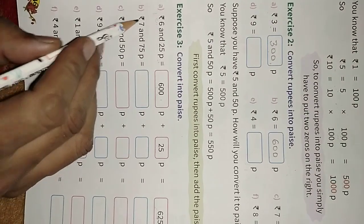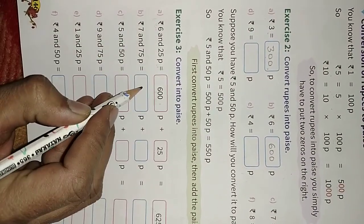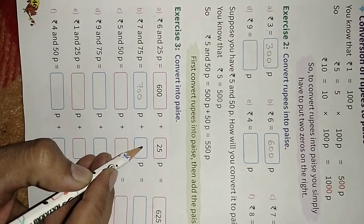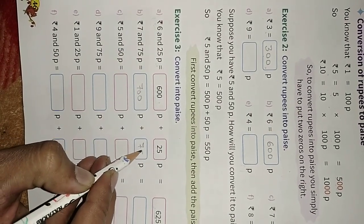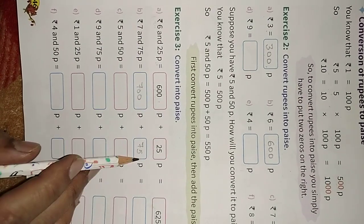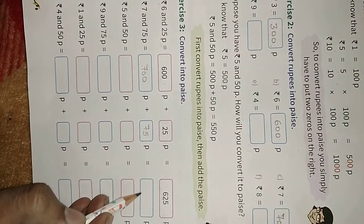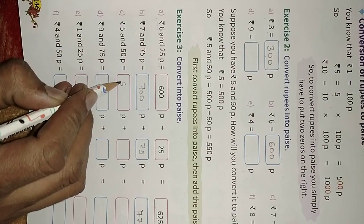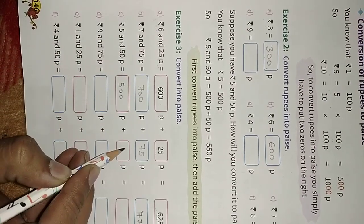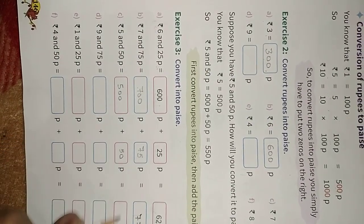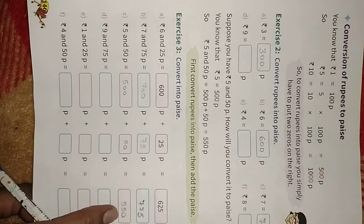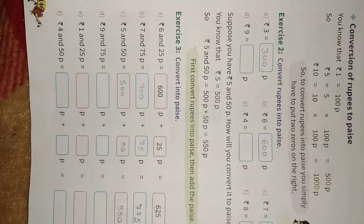In the second example: 7 rupees is equal to 700 paisa, and 75 paisa is written as same, so 700 plus 75 is equal to 775 paisa. And 5 rupees is equal to 500 paisa, and 50 paisa, so this is 550 paisa. Now you can do parts D, E, and F yourself.